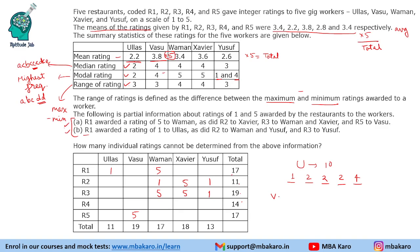Similarly for Vasu: one of the ratings given is 5 and his range is 3, so minimum he will get is 2. Modal rating is 4 and median is also 4. We have 9 plus 2 equals 11; he needs a total of 19, so 4 and 4 are the remaining values for Vasu.